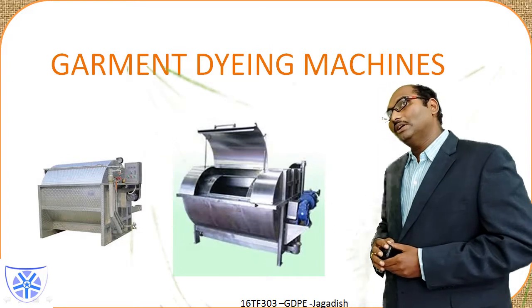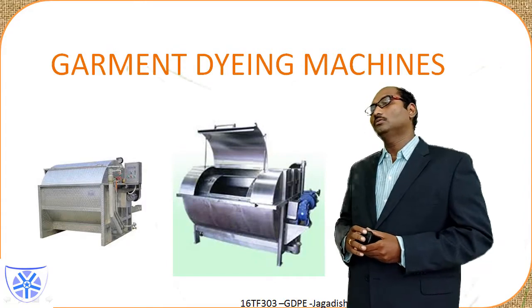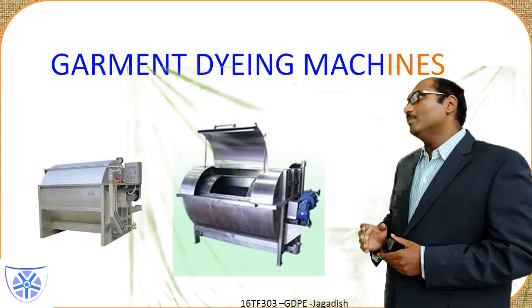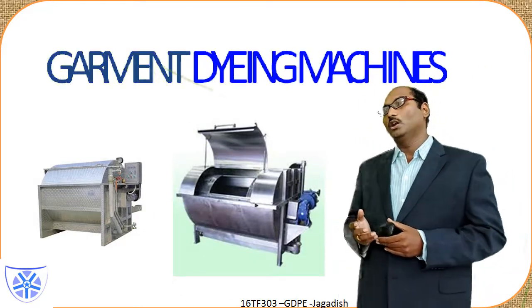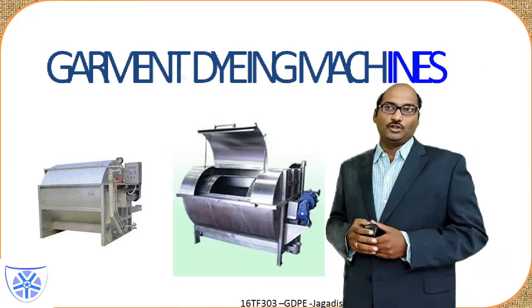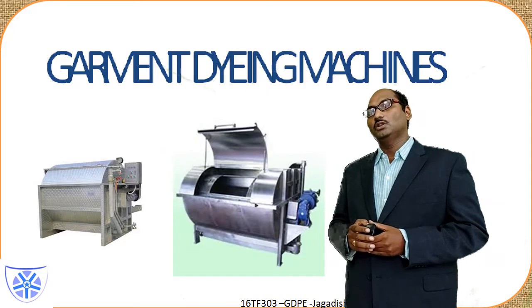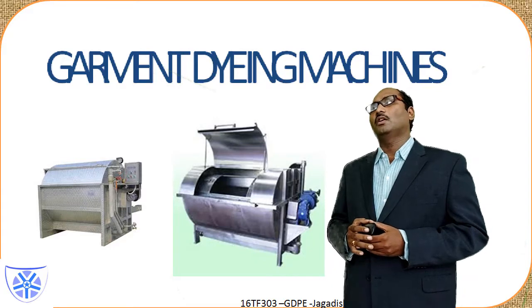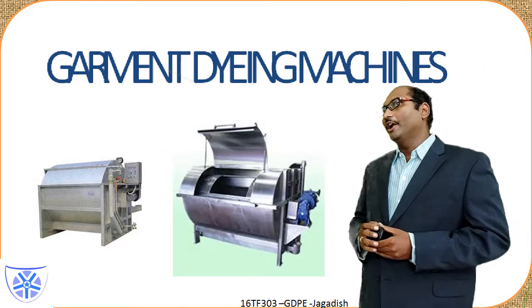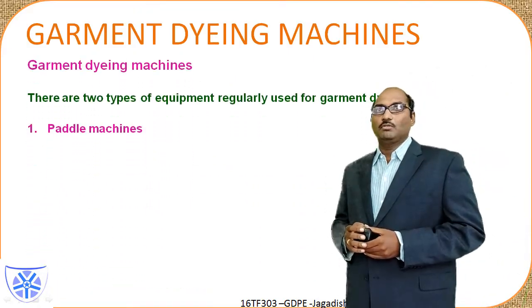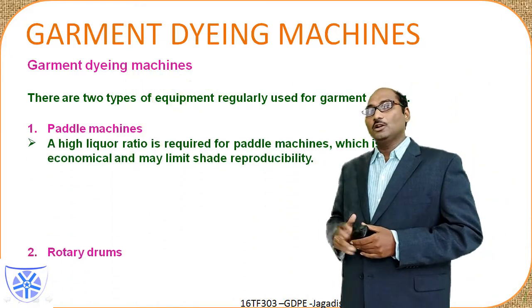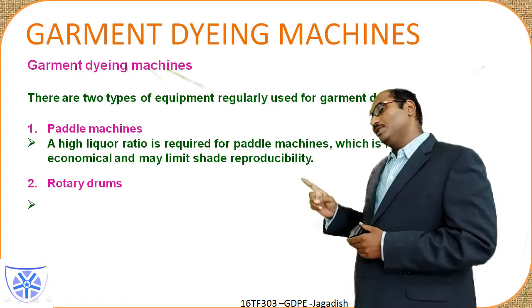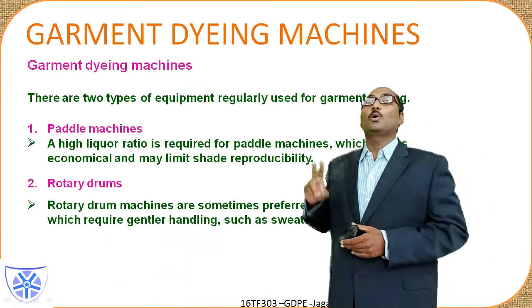Garment dyeing machines are very different from conventional fabric dyeing machines. In fabric dyeing machines, it is a continuous form — there are various types like jigger, high temperature, high pressure, and various other machines. But in comparison with them, garment dyeing machines are entirely different. Basically, these are two types: one is Paddle Machines and another one is Rotary Drum type machines.